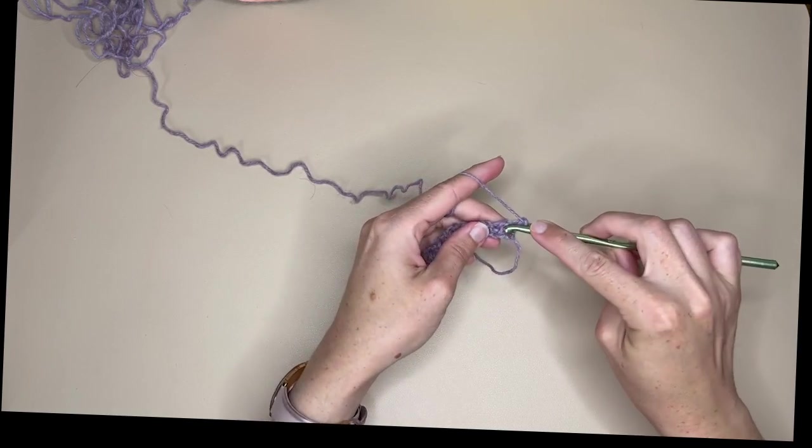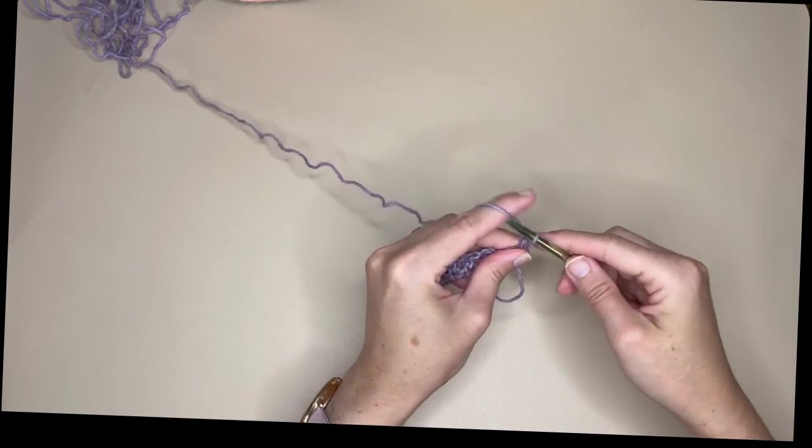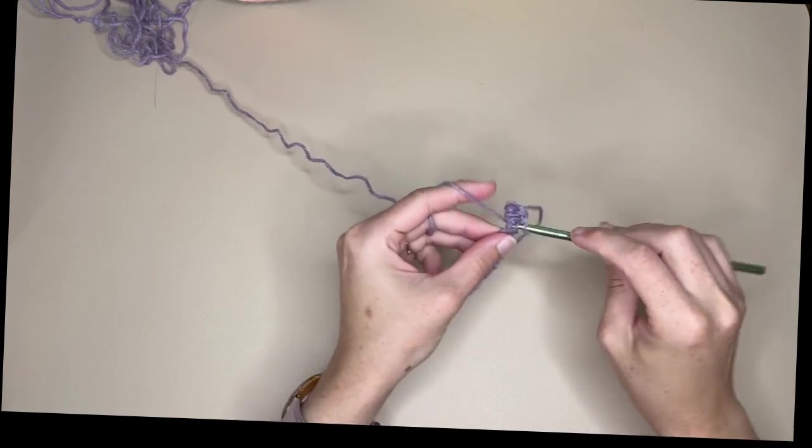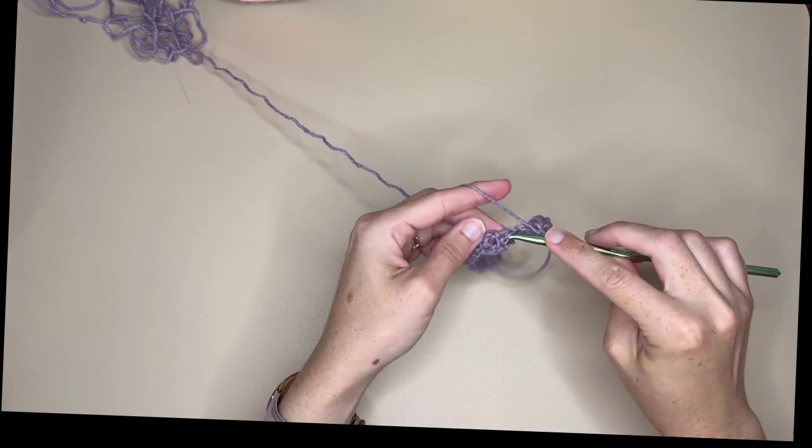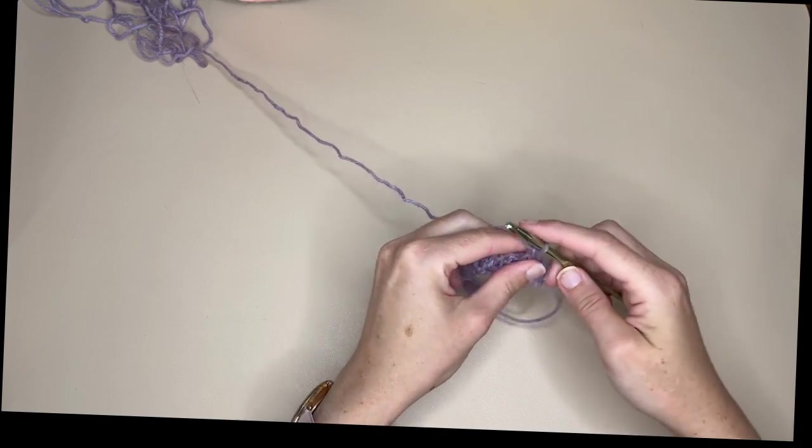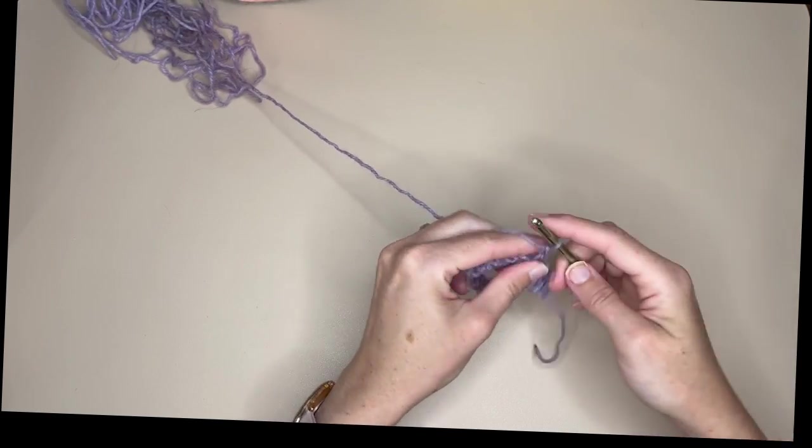So we're going to do a single crochet into that first space, chain one, into the next space, chain one, into the next space, chain one, and we're just going to keep going until we've reached the end of the row.